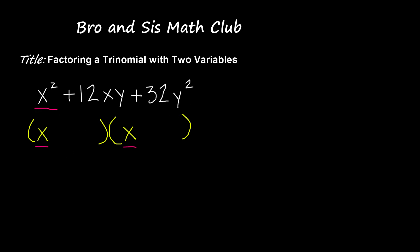And now what we're going to do is that we're going to take the c, which is the 32. So we take 32, and we're going to find factor pairs of 32 that when those factor pairs are added up, they have to equal 12, which is the b.